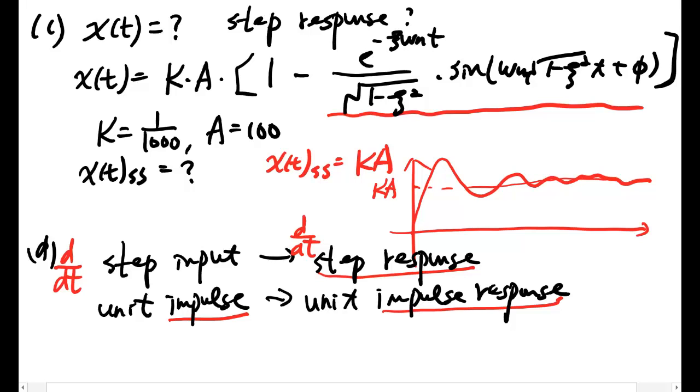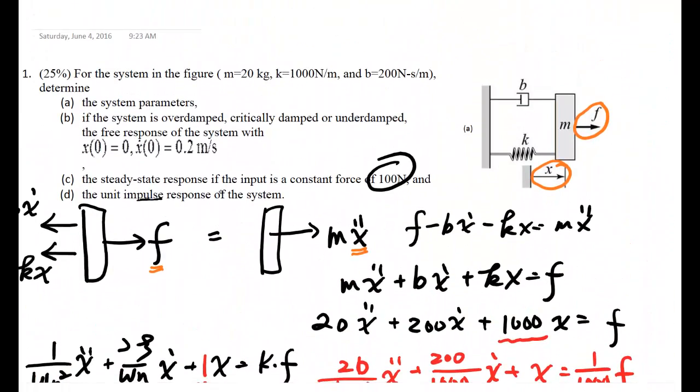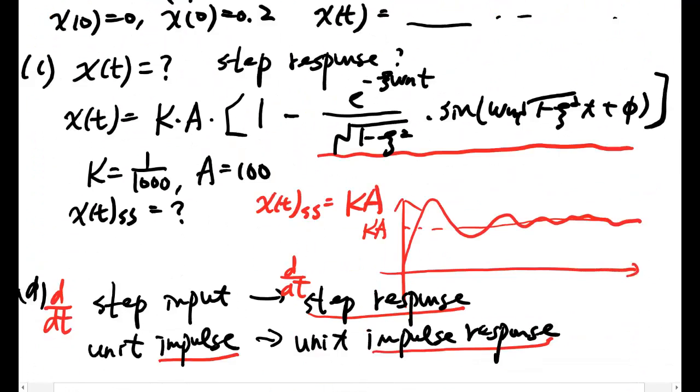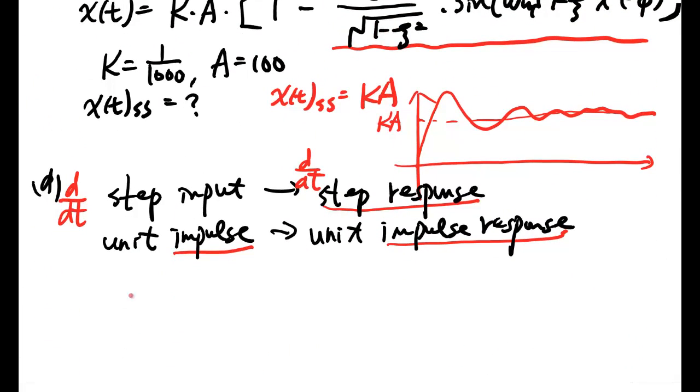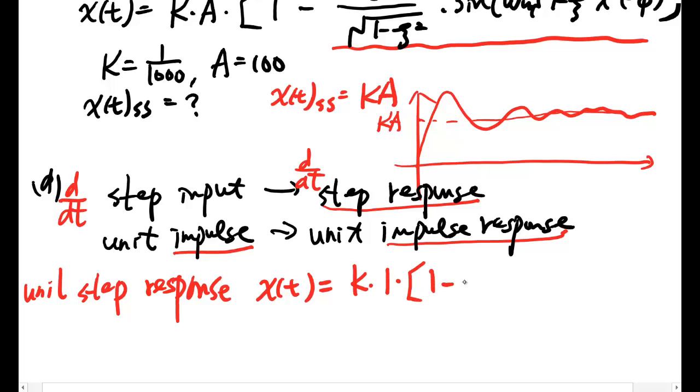In these questions, it asks you for unit, meaning A equals 1. So you can say unit step response. This will be the same equation here: K times A is 1, so it's 1 minus the exponential term. What's the unit impulse response?